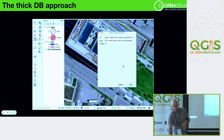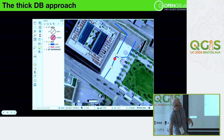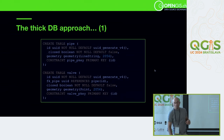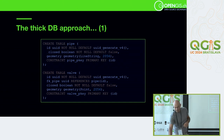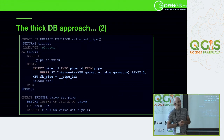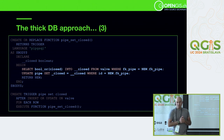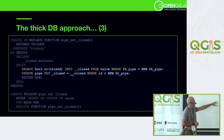I have a small video to illustrate: whenever you close the valve, the pipe gets closed and turns red. So how do we do that usually with a PostGIS database? We have a pipe table and a valve table, and we have functions — one to assign the valve to the pipe when you create it, and one that will close or open the pipe depending on the change status of the valve.